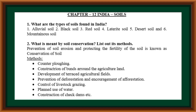What is meant by soil conservation? List its methods. Prevention of soil erosion and protecting the fertility of the soil is known as soil conservation. Methods: contour plowing, construction of bunds around the agricultural land, development of terraced agricultural fields, prevention of deforestation, control of livestock grazing, planned use of water, construction of check dams, etc.